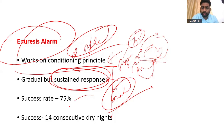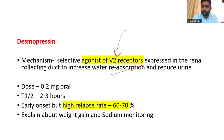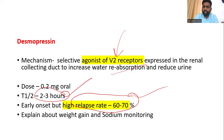A successful alarm treatment is defined as 14 consecutive dry nights. Now, why not just start the patient on desmopressin? The early success rate may be similar, but the advantage of alarm treatment is that it conditions the brain, so it is a sustained, long-term response with a very low relapse rate. Desmopressin acts as an agonist at V2 receptors on the collecting duct, increasing water reabsorption and decreasing urine output. The dose is 0.2 mg orally, with a half-life of two to three hours.